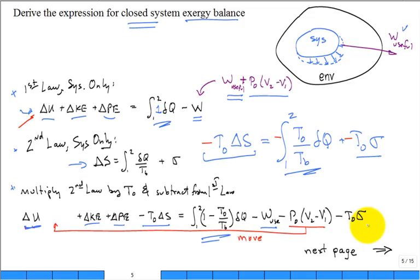The algebra gives: delta U + delta KE + delta PE − T₀·delta S = integral of (1 − T₀/T_b)·δQ, minus the useful and non-useful work terms, minus T₀·sigma. Then the p₀·delta V term is moved to the other side. The derivation is essentially done — it's name-calling now.